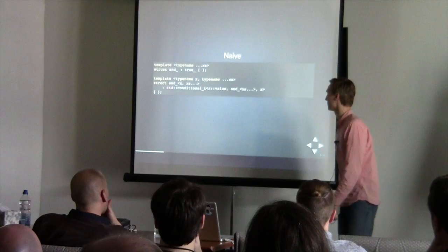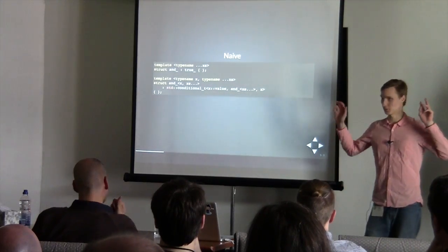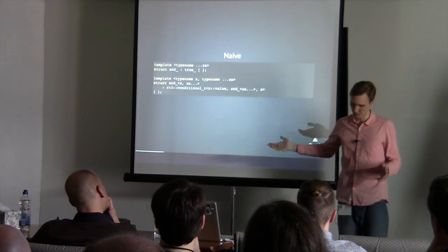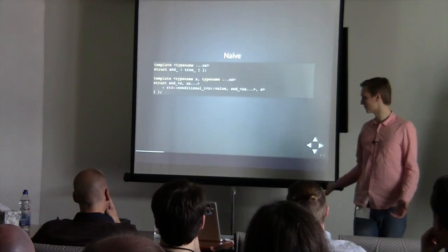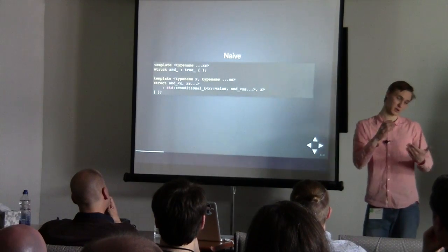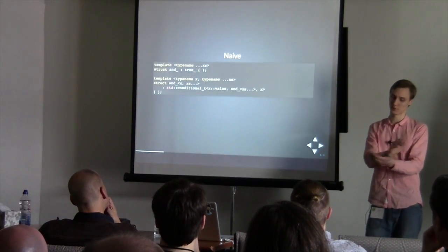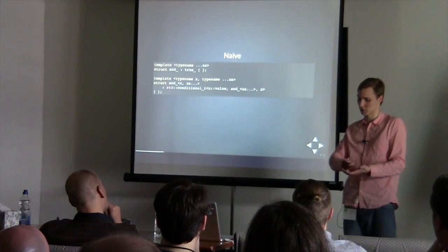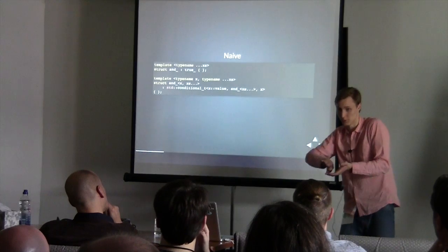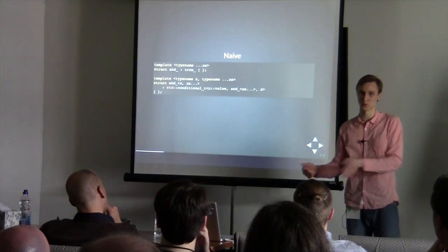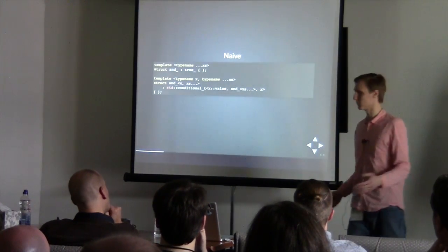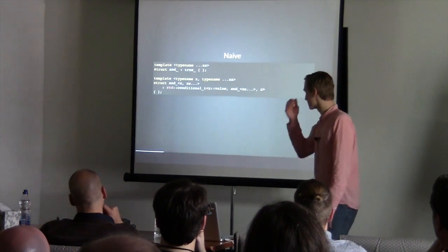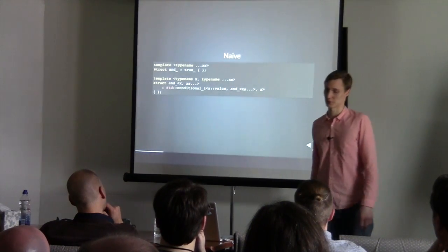Here's the naive C++03-ish implementation. The base template just returns true. Otherwise you check the first element in all the values you were given. If its value is true, you need to check whether the rest is also true. If it's false, just return false. So this is a naive recursive implementation — that's about the best you can do in C++03.